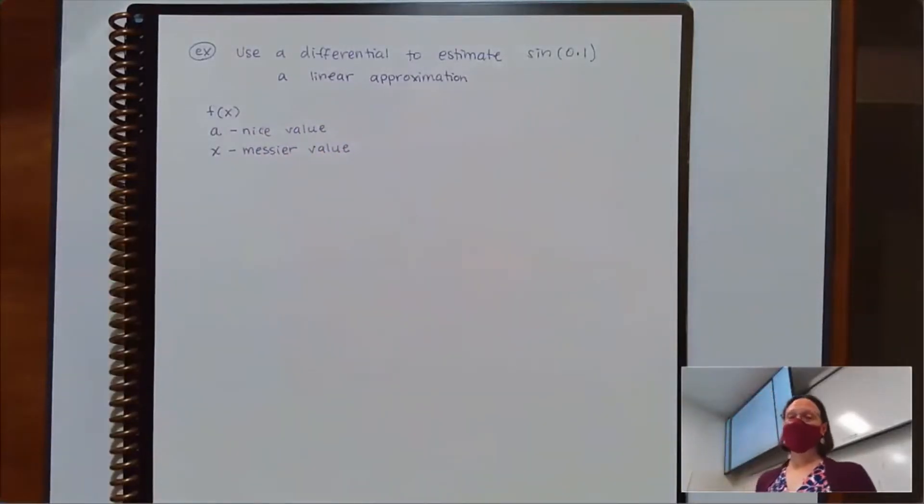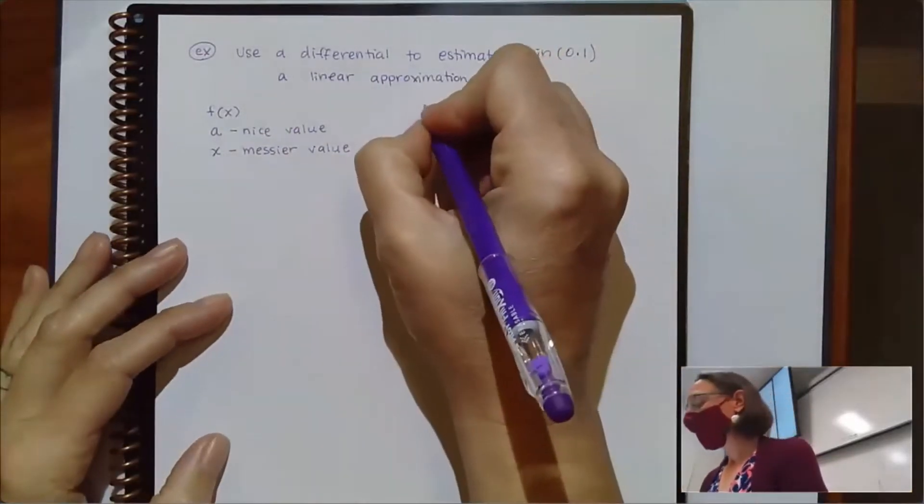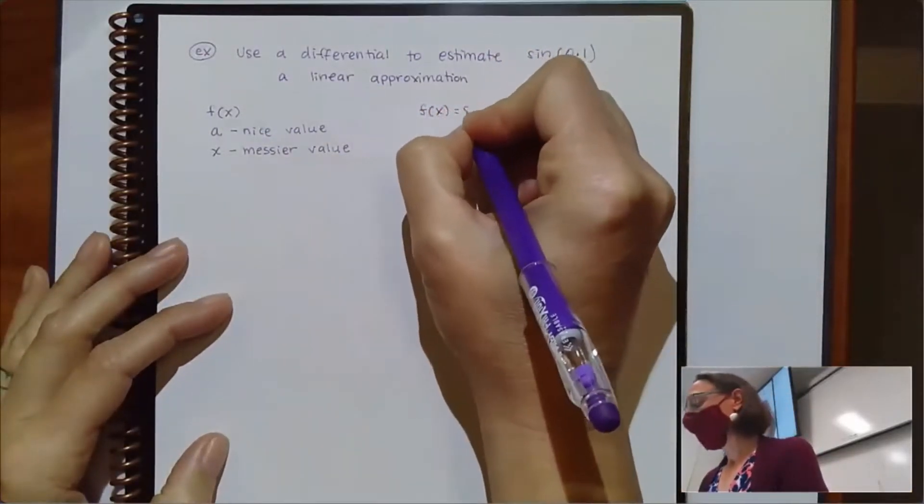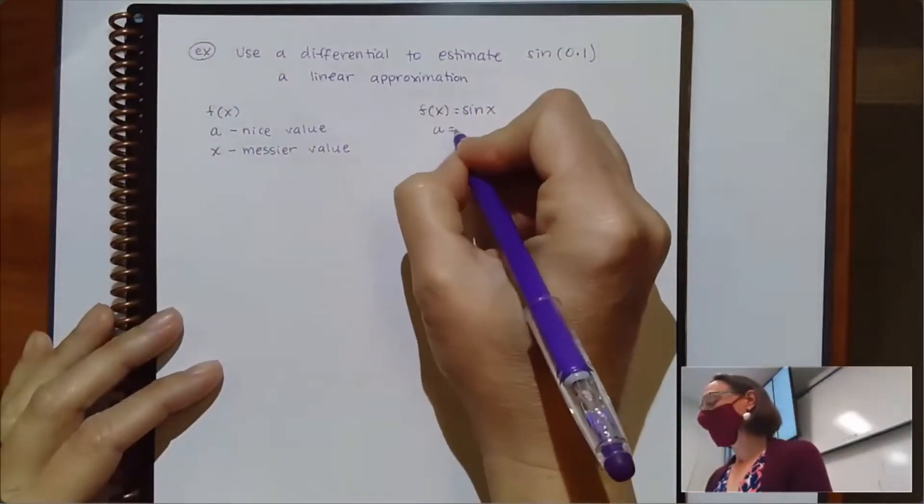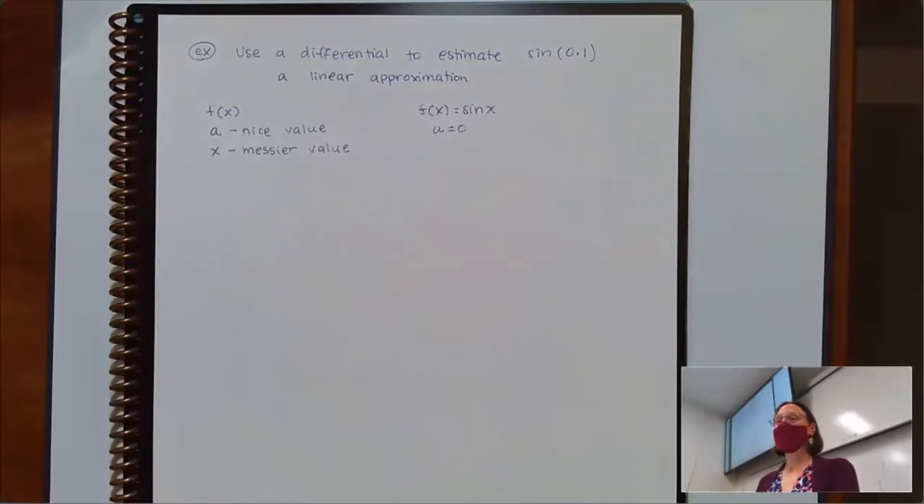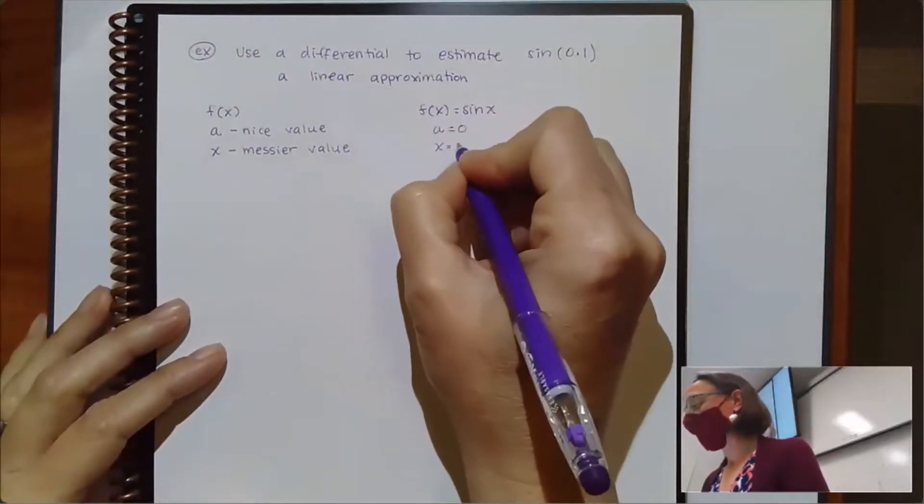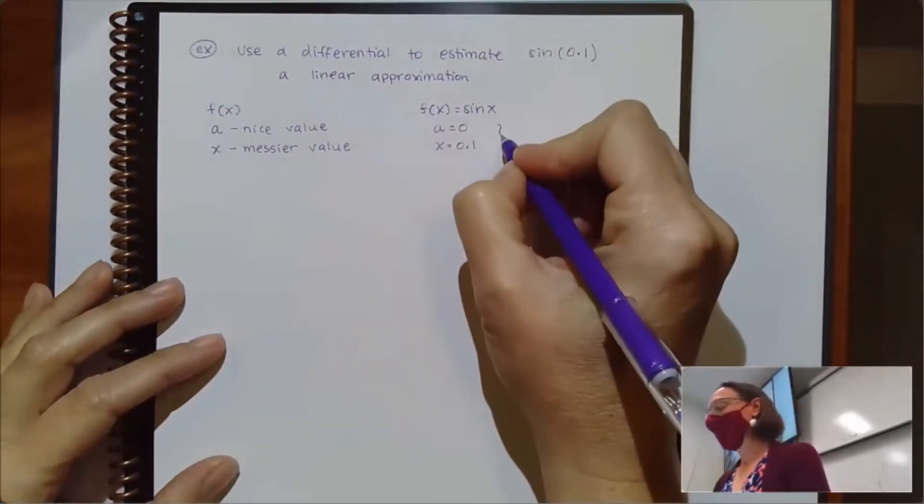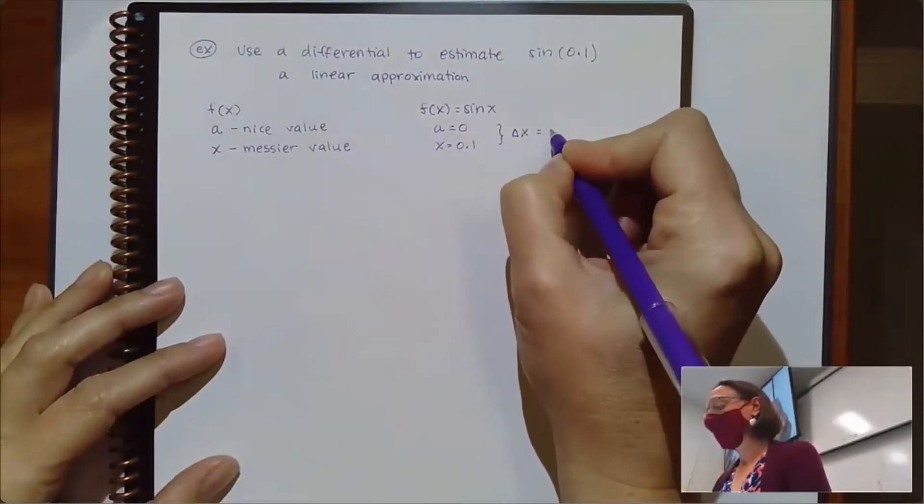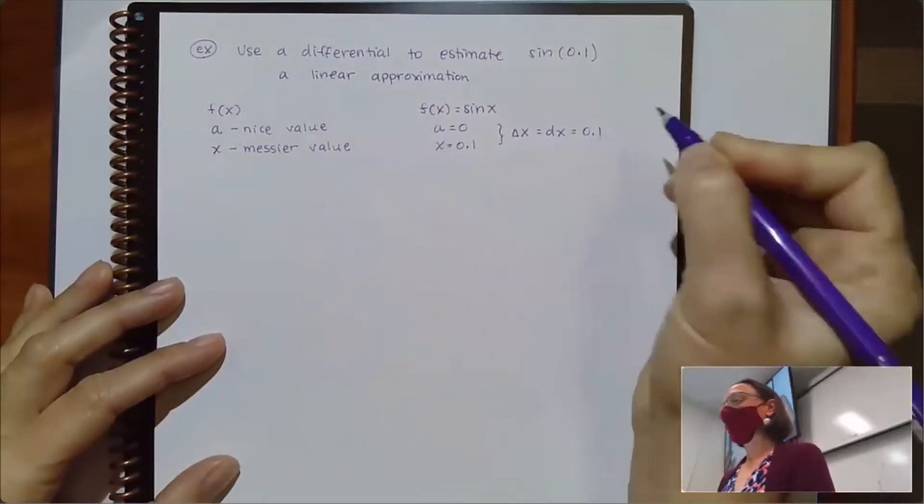So if I'm looking at this, my function is certainly sine of x. Now in terms of a nice value and a messy value, my nice value should be something that you could do without a calculator. I'm looking at 0 as being my nice value, and x, that messier value that I'm thinking about here, is the 0.1. The difference between your nice value and your messy value, that's the delta x piece or the dx piece. So that's going to be 0.1.